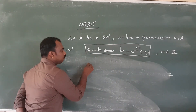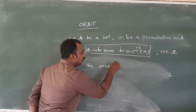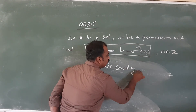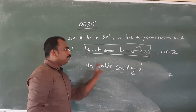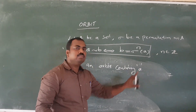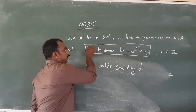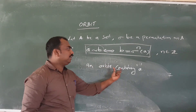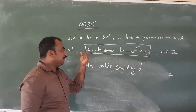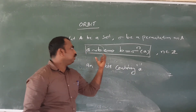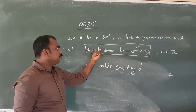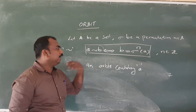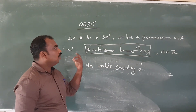An orbit containing A is a collection of all elements which are related to A. A related to B implies B is equal to sigma raised to n of A. The orbit is the collection of all such elements.